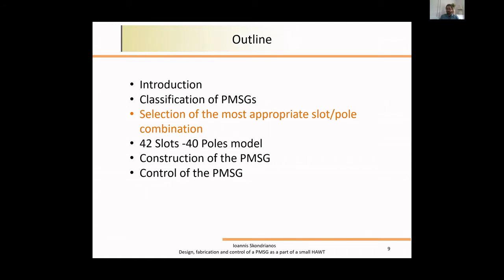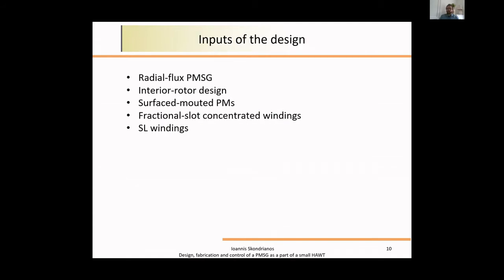After taking these parameters and more into consideration, we decided to go with a radial flux machine, interior rotor design, surface mounted magnets, and single layer fractional slot concentrated windings. I can explain what they are later, I don't have too much time right now.